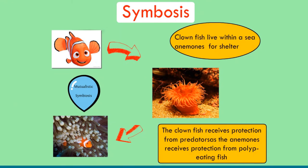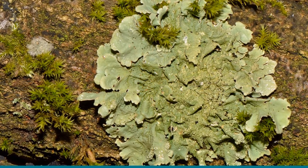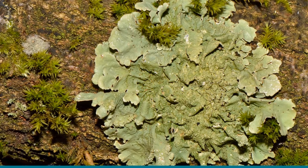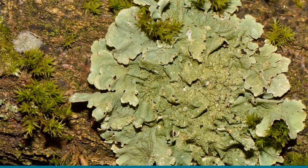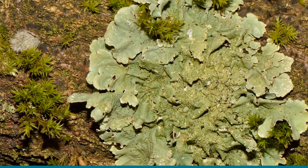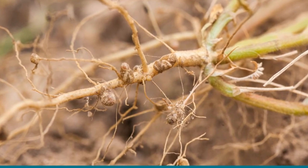Some organisms live together and share shelter and nutrients — this is known as a symbiotic relationship. Symbiosis may be defined as the habitual living together of organisms belonging to different species. It is an interaction or interrelationship between two organisms for mutual benefit or dependence. Lichen is an example of symbiotic nutrition; it is an association between algae and fungi. Algae are autotrophic and manufacture food for fungi, while fungi provide shelter, water, and minerals to algae.